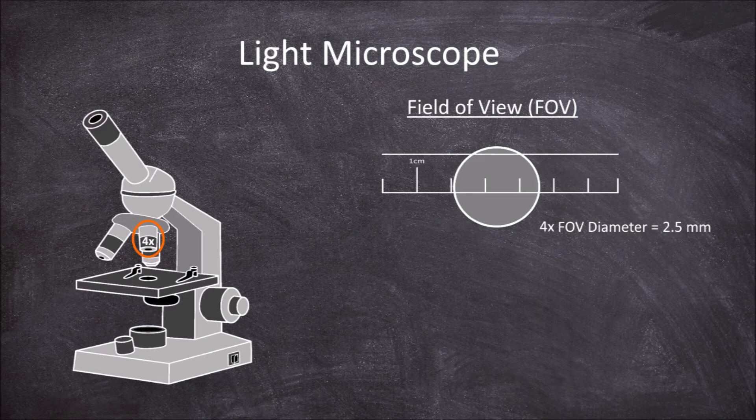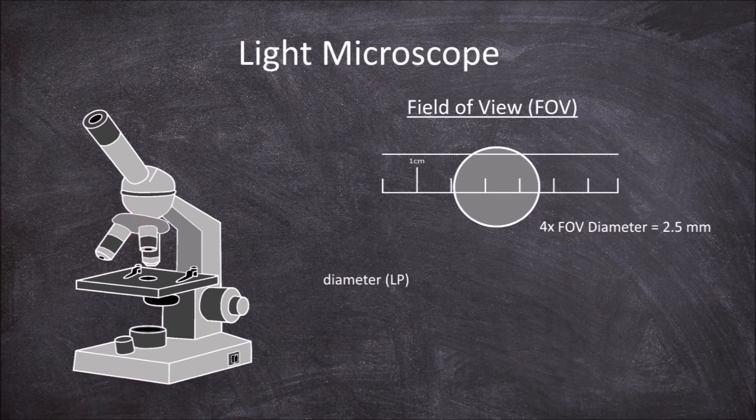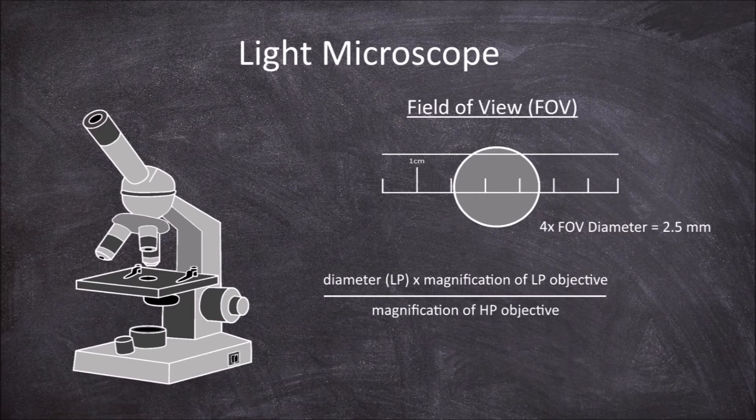When the power of magnification gets higher, the smaller the field of view diameter, and using direct measurement is not suitable. The field of view diameter can still be determined at higher power magnifications using an equation that uses the measurement taken at the lower power magnification. You times the diameter measured at the lower power by the magnification of the lower power objective, then divide this by the magnification of the higher power objective.